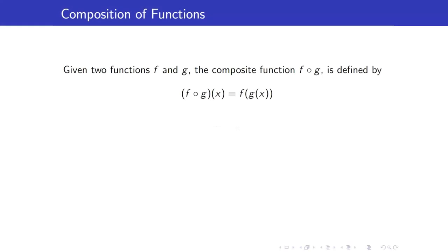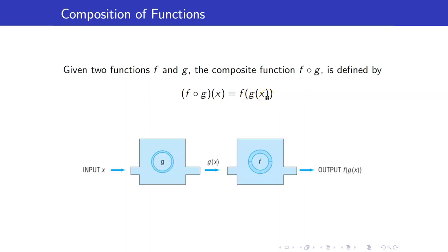Suppose that we're given two functions f and g. The composite function f circle g is defined to be f circle g of x. Whenever you're given f circle g of x, you put the input x under the function g. When it comes out, it will become g of x, and this g of x will be your input for the function f. When it comes out of the function f, the result is f of g of x.